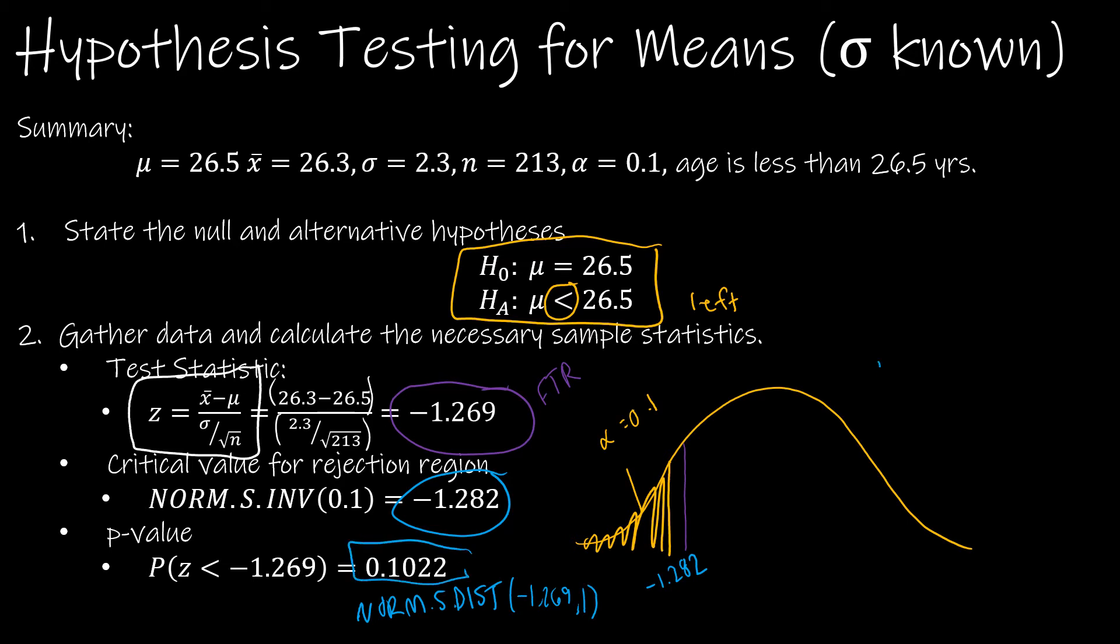And I just want to point out that our p-value of 0.1022 is, in fact, greater than alpha, which tells us to fail to reject.